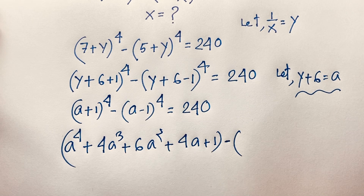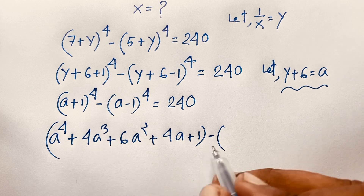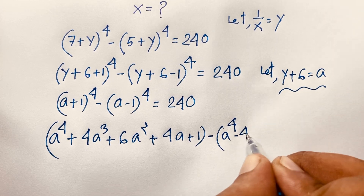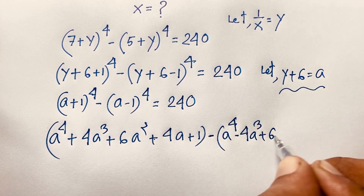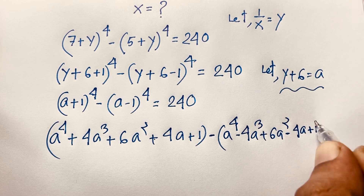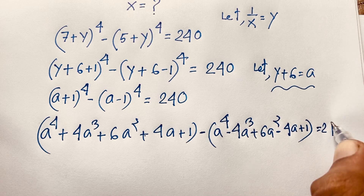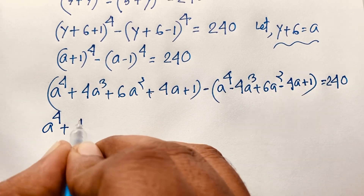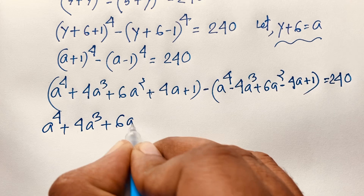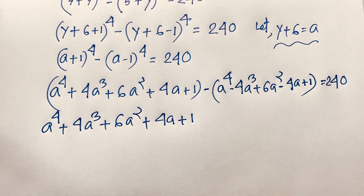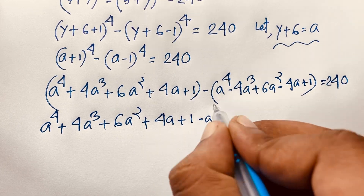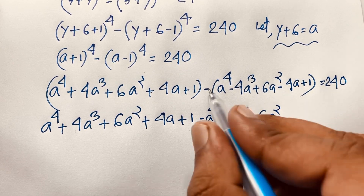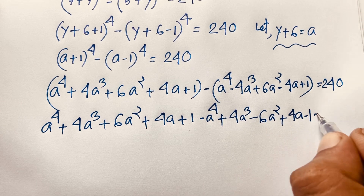And (a - 1)^4 expands to a^4 - 4a^3 + 6a^2 - 4a + 1. Now I subtract the second expansion from the first, writing out all terms: a^4 + 4a^3 + 6a^2 + 4a + 1 minus (a^4 - 4a^3 + 6a^2 - 4a + 1) equals 240.